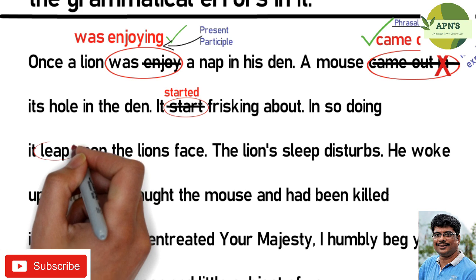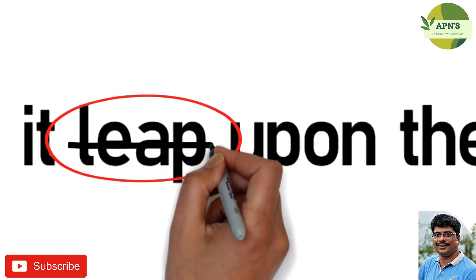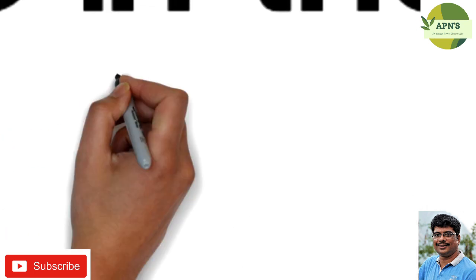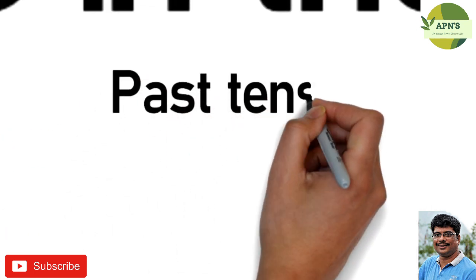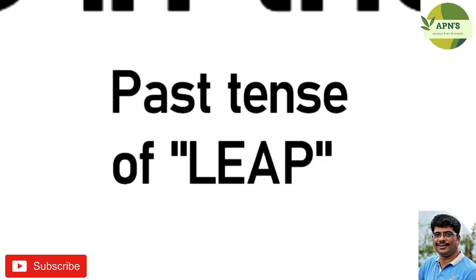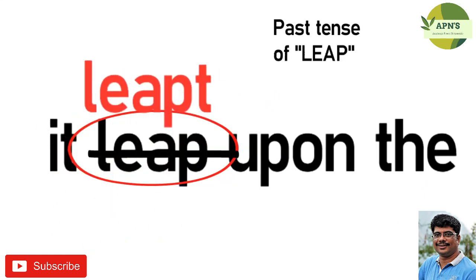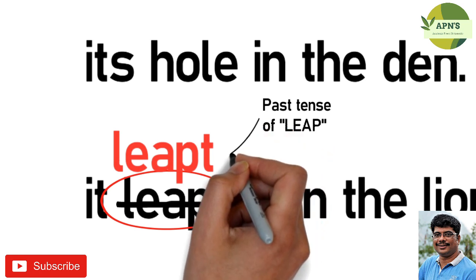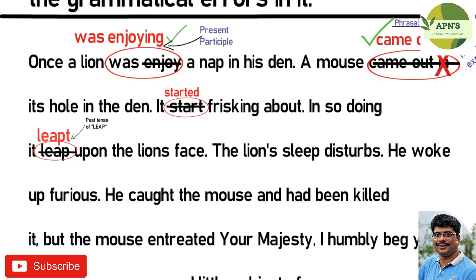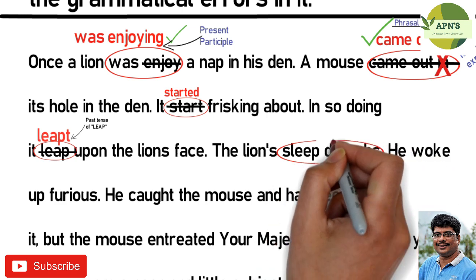The word 'leap' will be changed to 'leapt'. The paragraph describes an incident of the past but uses the present tense, so it needs to be corrected. Since 'leap' is in the present tense form, it should be changed to 'leapt', which is the past tense form of 'leap'.